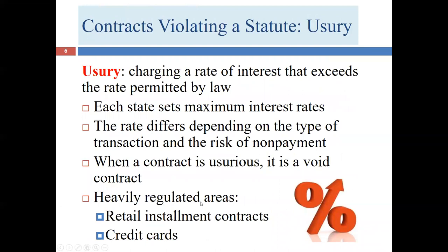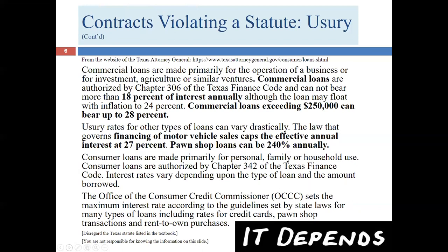Heavily regulated areas include credit cards, installment contracts, payday loans, car title loans, and similar products — and they should be, because people getting loans at pawnshops or elsewhere are often in a difficult financial position. They're the people who can least afford to pay very high interest rates. Don't worry about knowing any of the specific numbers; this is just to give you a sense of how this area of the law works.